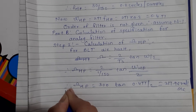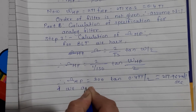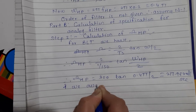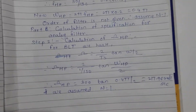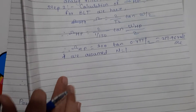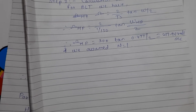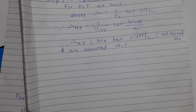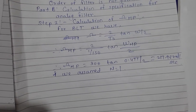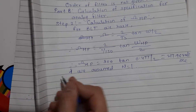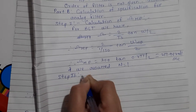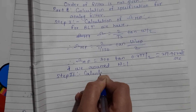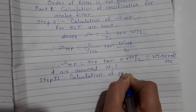We assume n equals 1, that is the order of the filter is 1. Now Step 2 is calculation of pole positions.